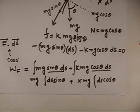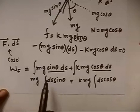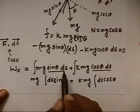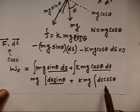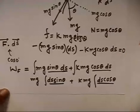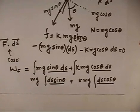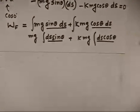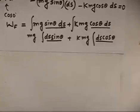You see, we have come up to this result that is the work done by forces Mg sin theta ds and Kmg cos theta ds. Now we are interested in ds sin theta and ds cos theta. We were looking what exactly ds cos theta mean and what exactly ds sin theta mean. So for that, we have taken the help of next sheet. We have shown some diagram here.